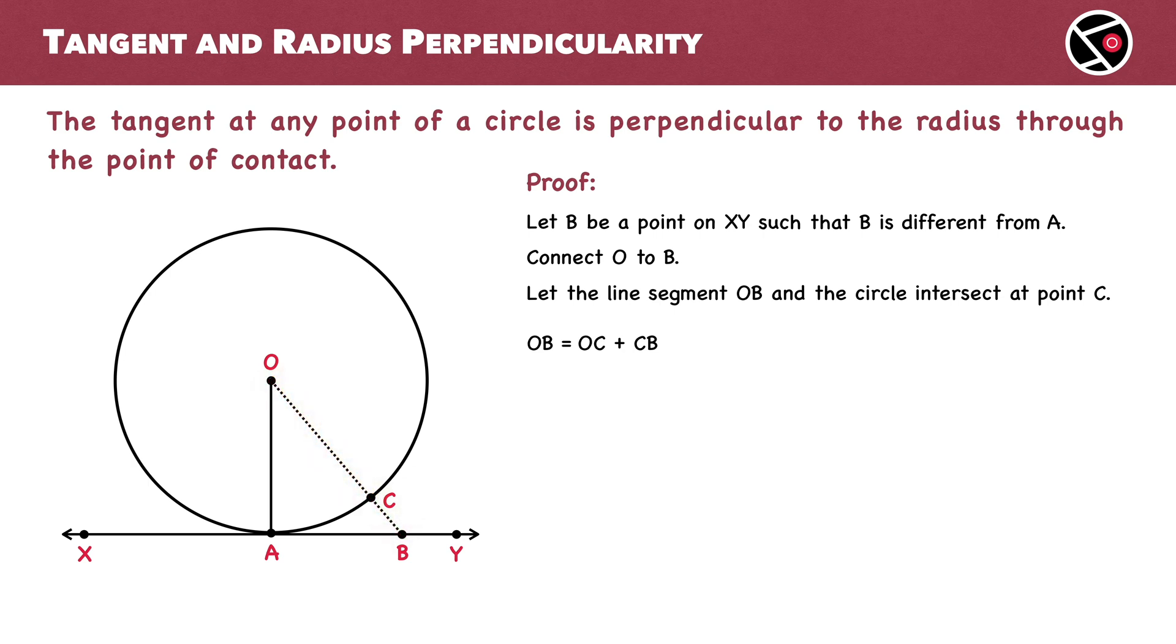We also have OC equal to OA. Both are radii of the same circle. This means we can replace OC with OA to get the length of segment CB. The length of segment CB is a positive quantity which means OB is definitely longer than OA. We can rewrite this as OA is less than OB.